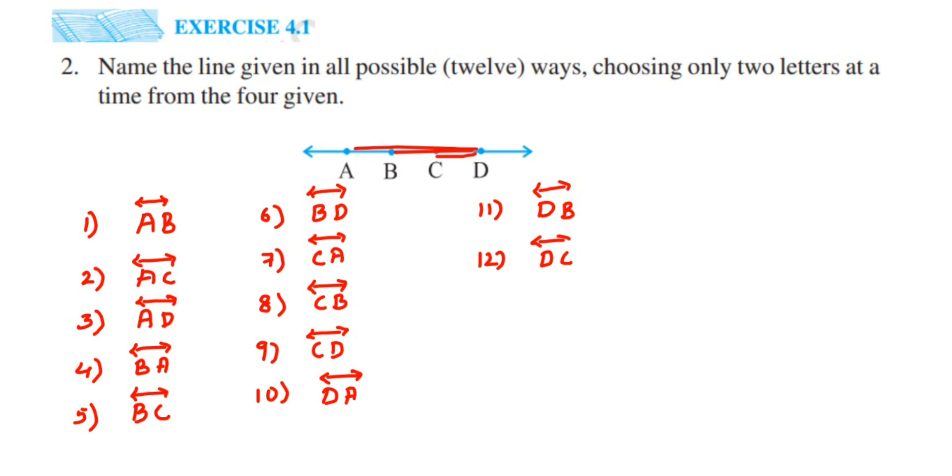That's it. So we have got all the 12 combinations. Instead of writing the opposite like AB can be same as BA, don't write that in the beginning. We can write them down but don't do it because you may lose a few names of the lines. It's possible. So better go with alphabetic order. Start with A, then B, then C, then D.